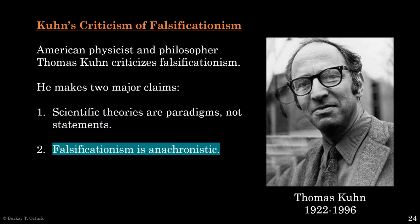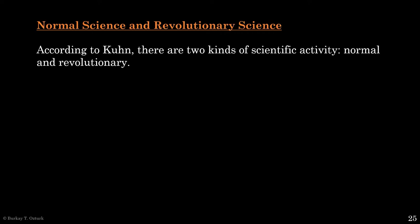The second charge Kuhn raises against falsificationism is that it is anachronistic. To understand this charge, we need to first understand how Kuhn sees science as a practice embedded in history. According to Kuhn, there are two kinds of scientific activity: normal and revolutionary, which he also calls extraordinary.